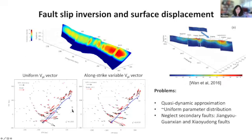We can also attempt to make comparisons between our model co-seismic slip and what geodetic inversion of co-seismic slip shows. There is a stronger or larger amount of slip towards the southern segments than to the northern segments.